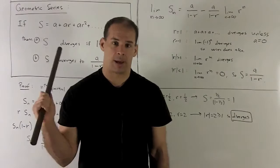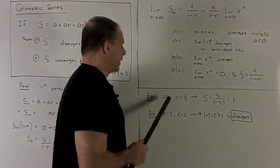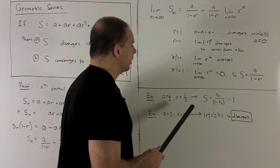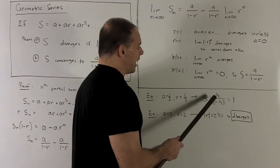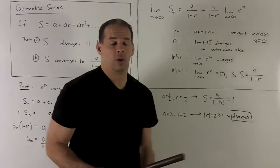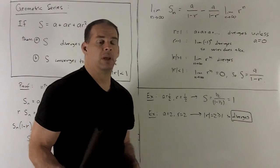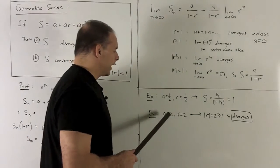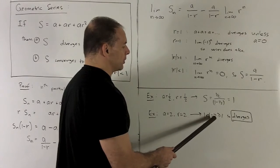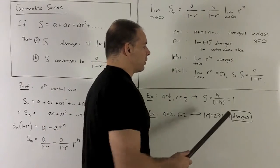And that's the formula we have for the sum in the statement. Let's look at some examples. The one we had before: a was equal to a half, r was equal to a half. So we get one half over one minus a half, which equals one half over one half, which equals one — the length of the unit interval for the motivating problem. For the broken example, a equals two, r equals two, so the absolute value of r equals two, which is bigger than or equal to one, so we stop immediately — this series diverges.